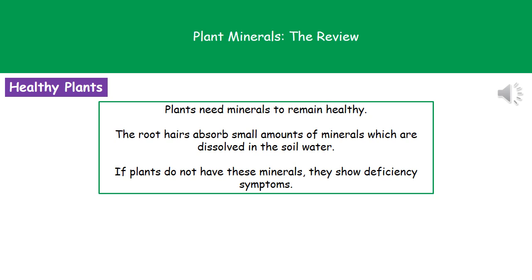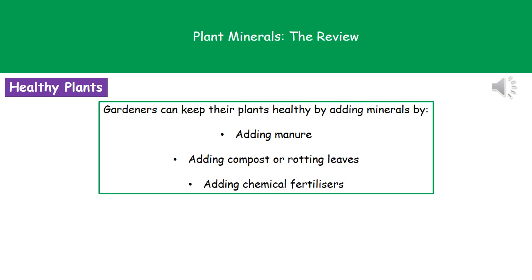If our plants don't have all of the required minerals, they start to show what's called deficiency symptoms. If we want to make sure our plants are always healthy, gardeners or farmers can ensure this by adding minerals to them. There are a few ways to do this: the first is adding manure, the second is adding compost or rotting leaves, and the third is adding chemical fertilizers to the soil.